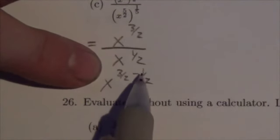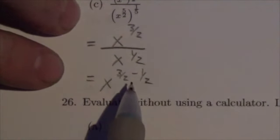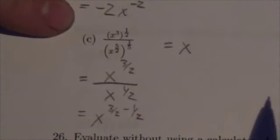Well, 3 halves minus 1 half is just 2 halves. That's just 1. So after all that, this reduced down to just x to the 1. Well, I like that. That's kind of cool. Neat little answer there.